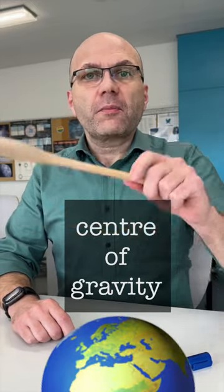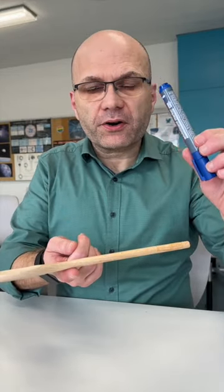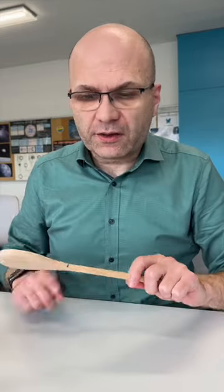This is a wooden spoon. I will try to find its center of gravity by balancing it on my finger. Looks like we found it. I'm gonna mark it with a marker. Now I'm gonna cut it right here.